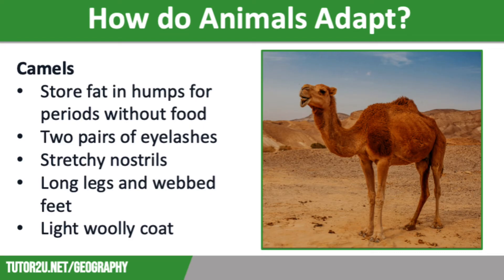And of course, we can't talk about how animals adapt to the desert without mentioning the camel. Camels are known as ships of the desert, and are probably the most famous of all the desert animals. They have many adaptations that help them survive in the desert. Firstly, they store fat in their humps, meaning they can go without food for long periods of time.